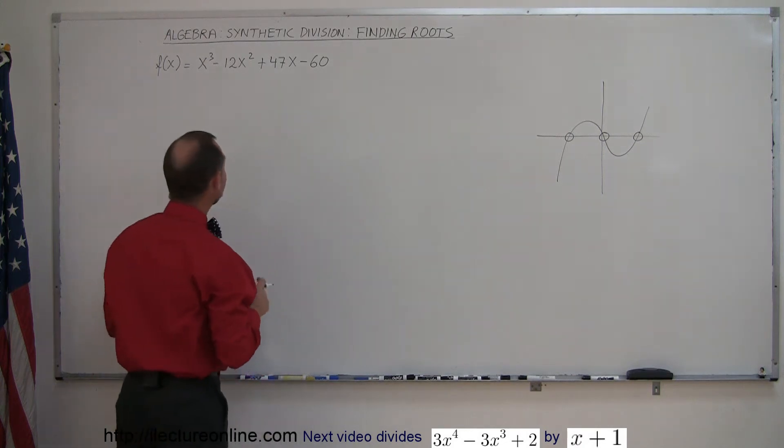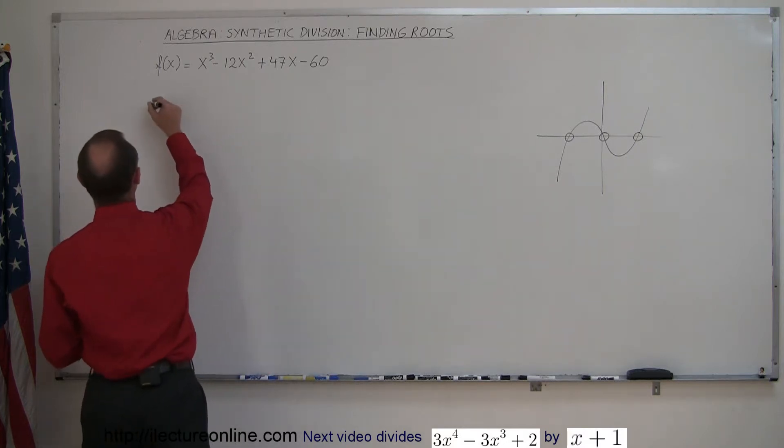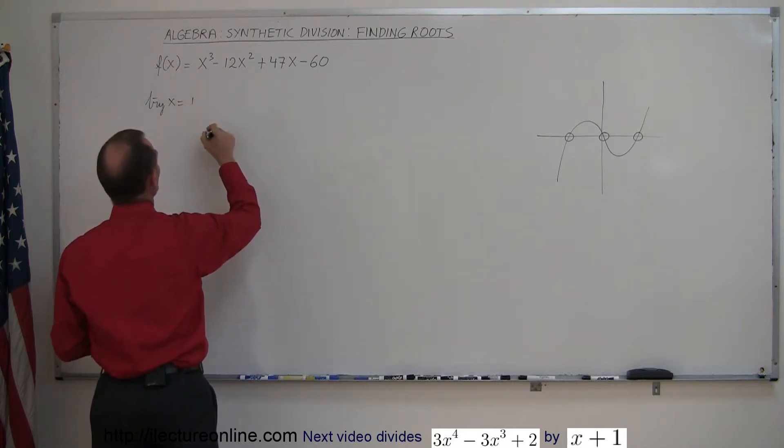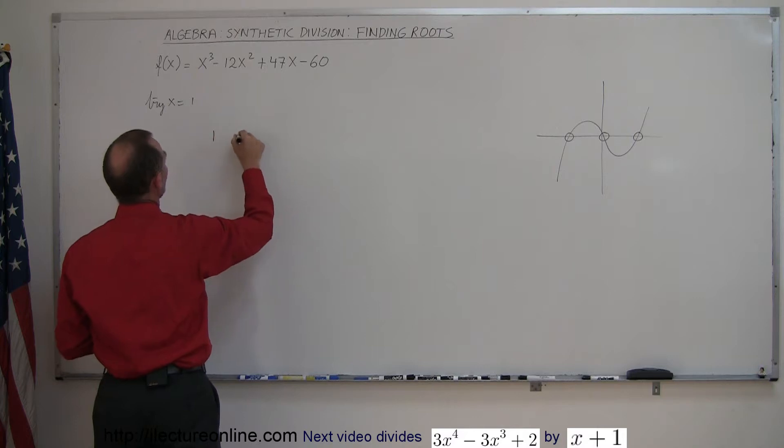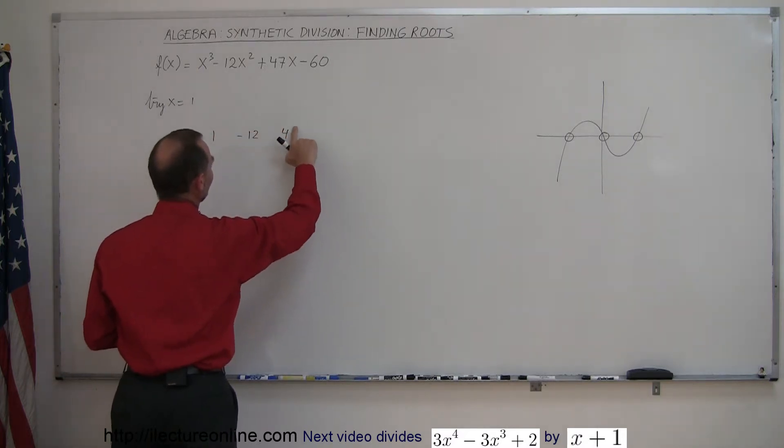So what we're going to do is we're going to guess as to what our first root might be. We're going to try x equals 1. Then using synthetic division, we take the coefficients of the terms in our polynomial, which is a 1, a minus 12, a 47, and a minus 60.